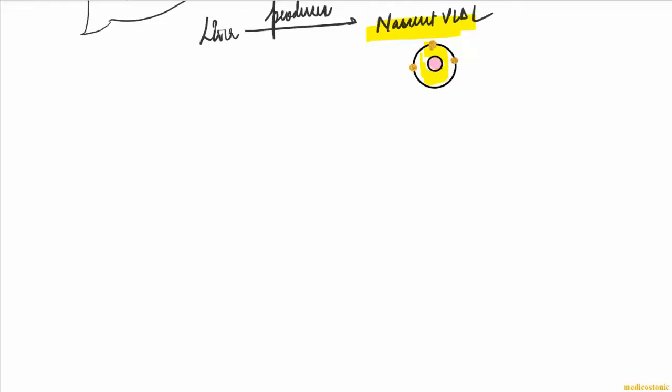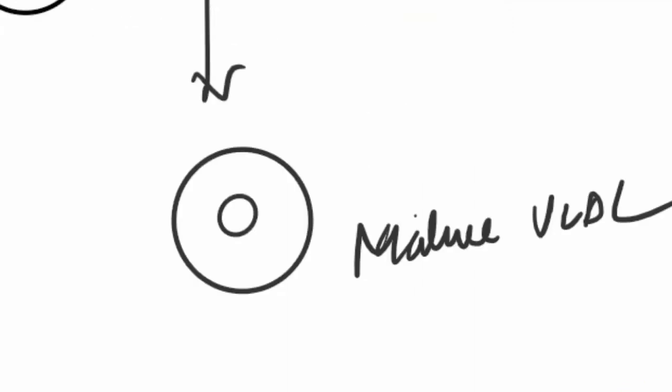The HDL molecule is going to donate apo C and E to the nascent VLDL in order for its maturation. We'll get something like this. Now this is known as the mature VLDL. It consists of apo lipoproteins B100, C, and E given by the HDL molecule.